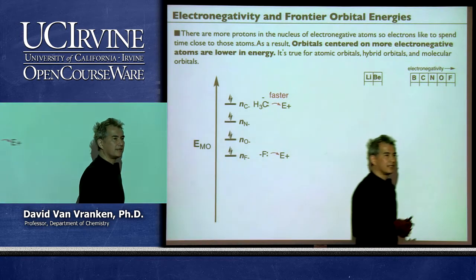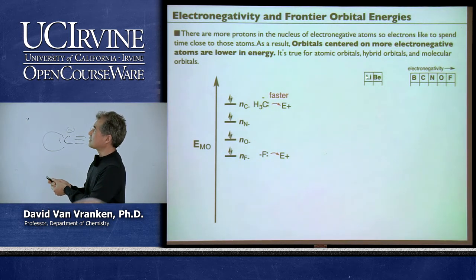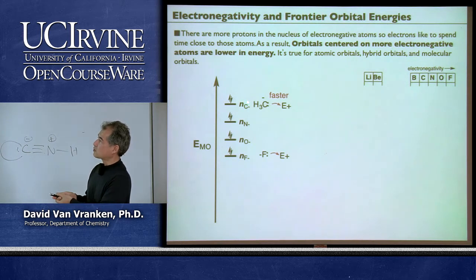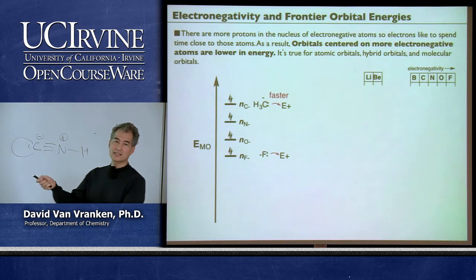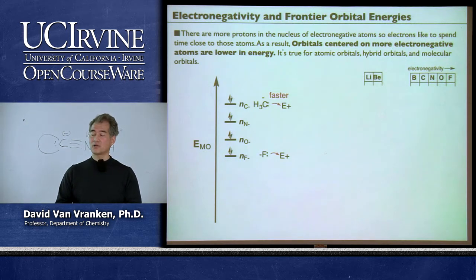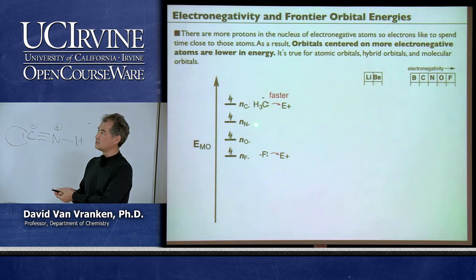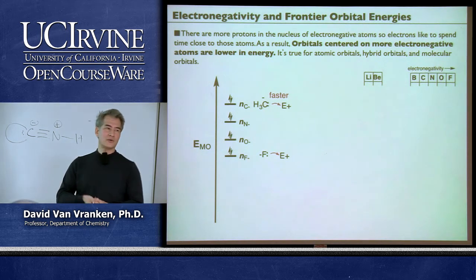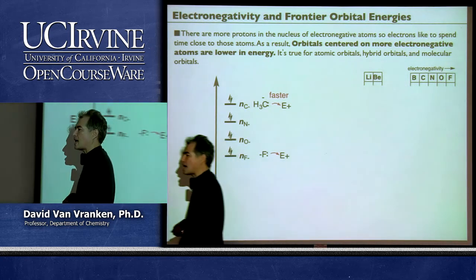Let's walk through the implications of electronegativity. As I march across the second row of the periodic table—adding more protons to the nucleus—the orbital energies drop. Starting with a methyl anion: if I replace carbon with the more electronegative nitrogen atom, that non-bonding lone pair orbital drops in energy. A lone pair on nitrogen ought to be less reactive than a lone pair on carbon. Amide anions are less nucleophilic and less basic than alkyl anions. Alkoxide lone pairs are less nucleophilic than nitrogen lone pairs. And a fluoride anion is nowhere near as nucleophilic as a methyl anion. You already knew this—it has to do with replacing carbon with something more electronegative.